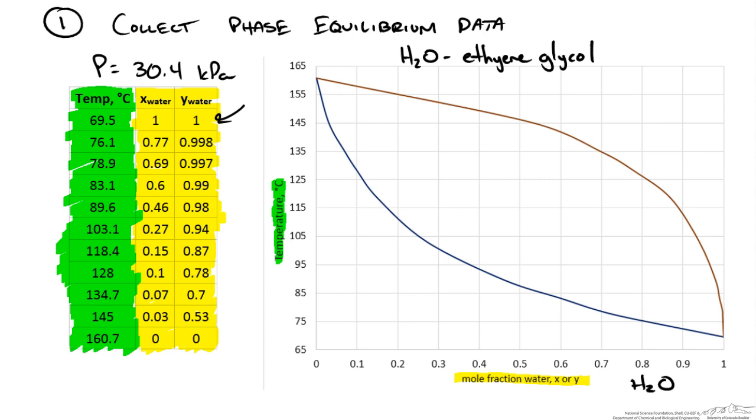Is this the more volatile component? Well when we have pure water we have a lower saturation temperature which is around 70 degrees, compared with no water when we have a composition of zero we have all ethylene glycol which has a higher saturation temperature of around 161.